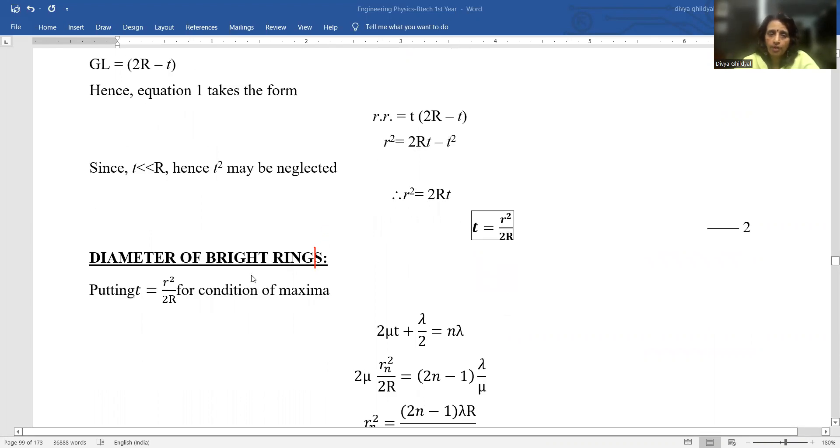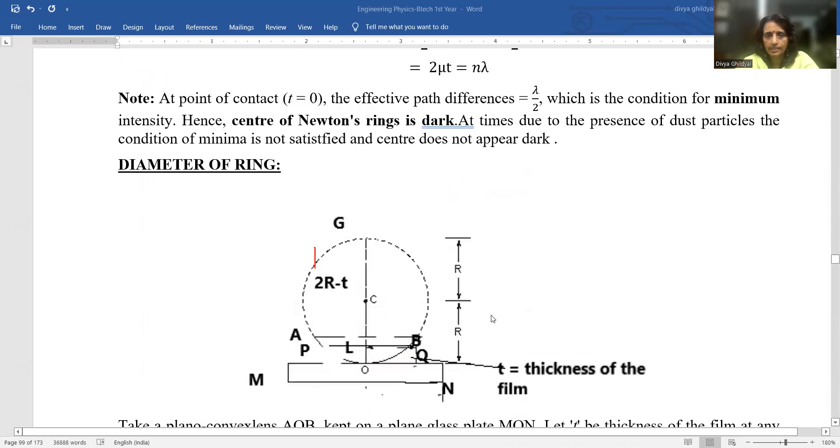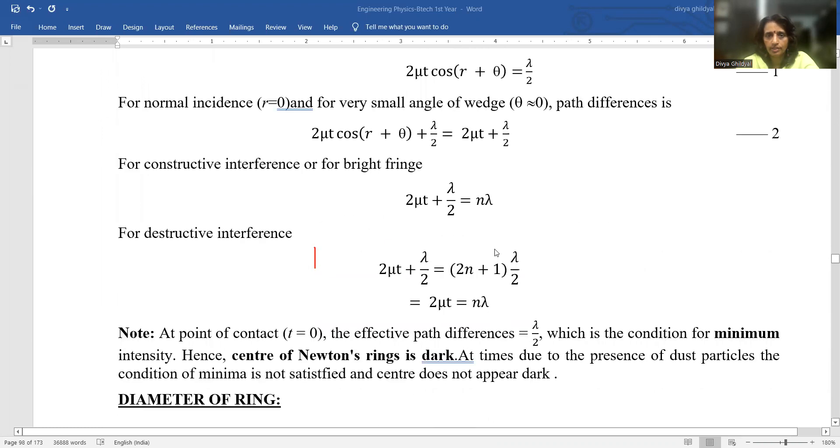Now, for bright rings, condition of maxima is satisfied, so I get 2μT + λ/2 = Nλ. Where did I get this from? I have derived this above for you in my previous lecture.